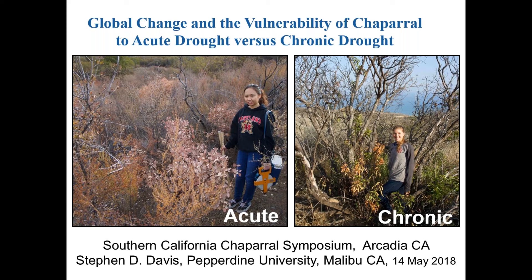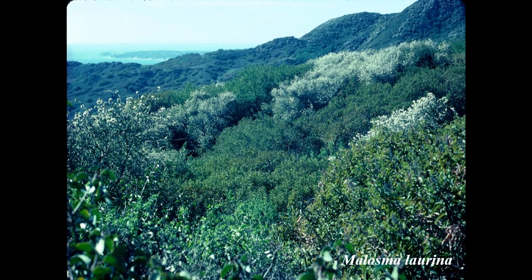This is what our campus looks like — here's the Pacific Ocean, Point Dume, here's Malosma laurina, Ceanothus spinosus, all co-dominants, overlapping, all about three meters tall. But do their roots penetrate the same depth? This one only goes down five or six feet because it's a non-sprouter after fire. When I came in 1974, fires came every 12 years average for the Santa Monica Mountains; today it's every seven years — fire frequency is going up.